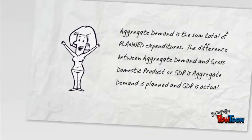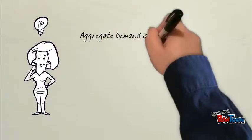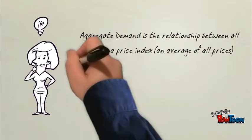So when we look at aggregate demand we're looking to graph prices or a price index versus total output or national income of an economic system.